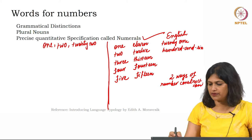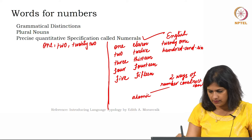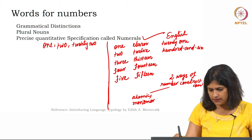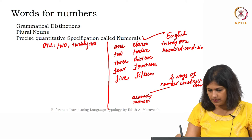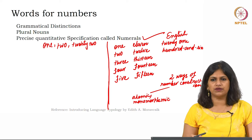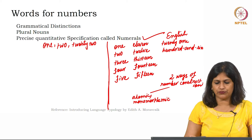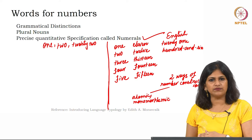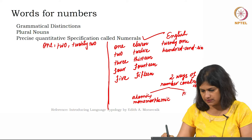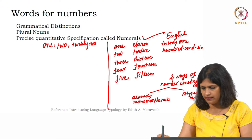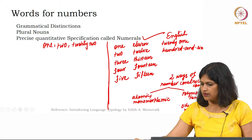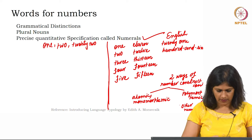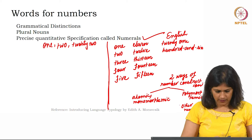First, the number can have an atomic or monomorphemic name. Atomic means there can be no further division — either you call it atomic or monomorphemic. This is substantiated by the first column: 1, 2, 3, 4, 5 — you cannot divide them. The second way is polymorphemic, where numerals are constructed from other numerals.